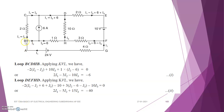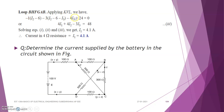The third loop is BHFGAB, considering a 24-volt battery and 4-ohm resistance. By applying KVL to this third loop, we get the equation: 4i1 plus 4i2 minus 3i3 is equal to 48. Mark it as equation number 3.